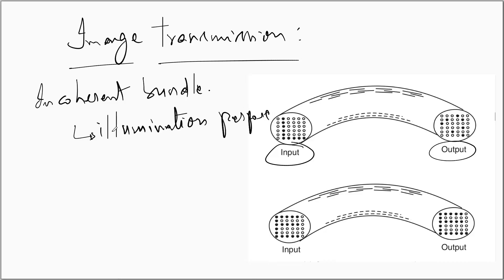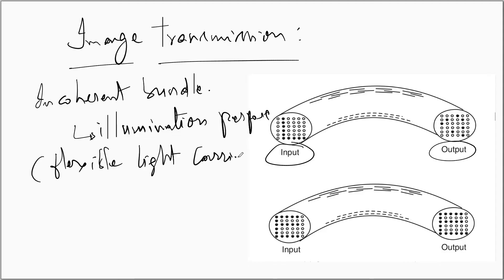In incoherent bundles, there is no correlation in the position of the fiber terminations at one end of the bundle with that at the other end, so they are used for illumination purposes. They are also called flexible light carriers — they essentially carry light from one end of the fiber to the other end. When the fibers are correctly arranged so that the terminations occupy the same relative position in both bound ends of the bundle, the bundle is said to be a coherent bundle.